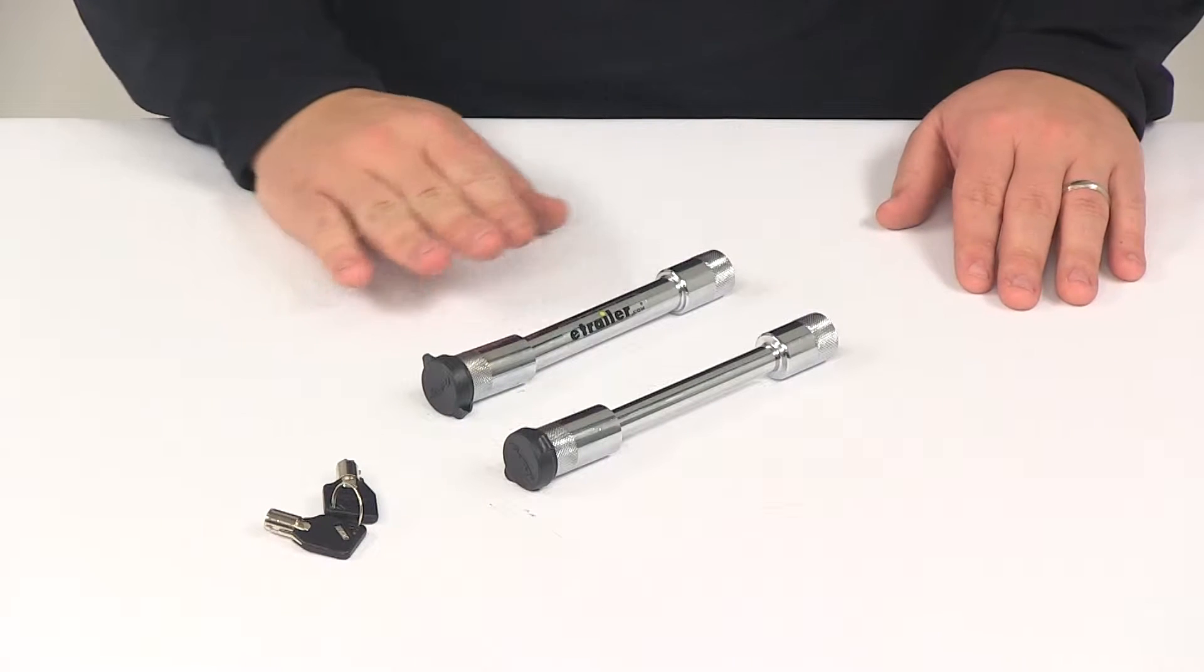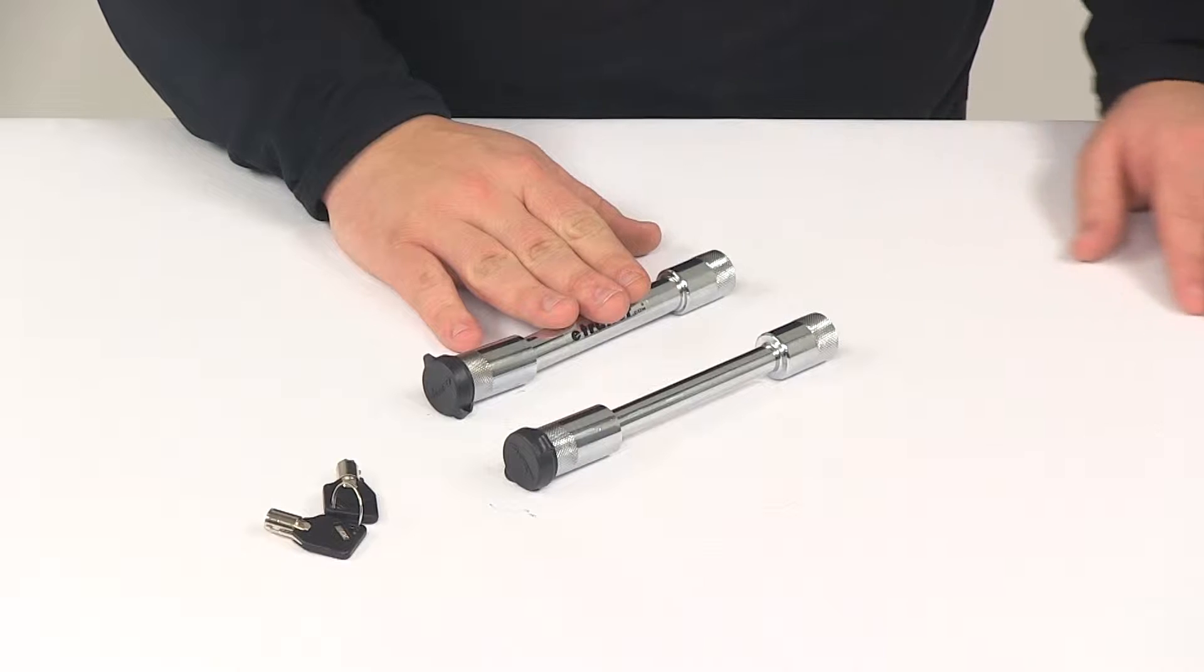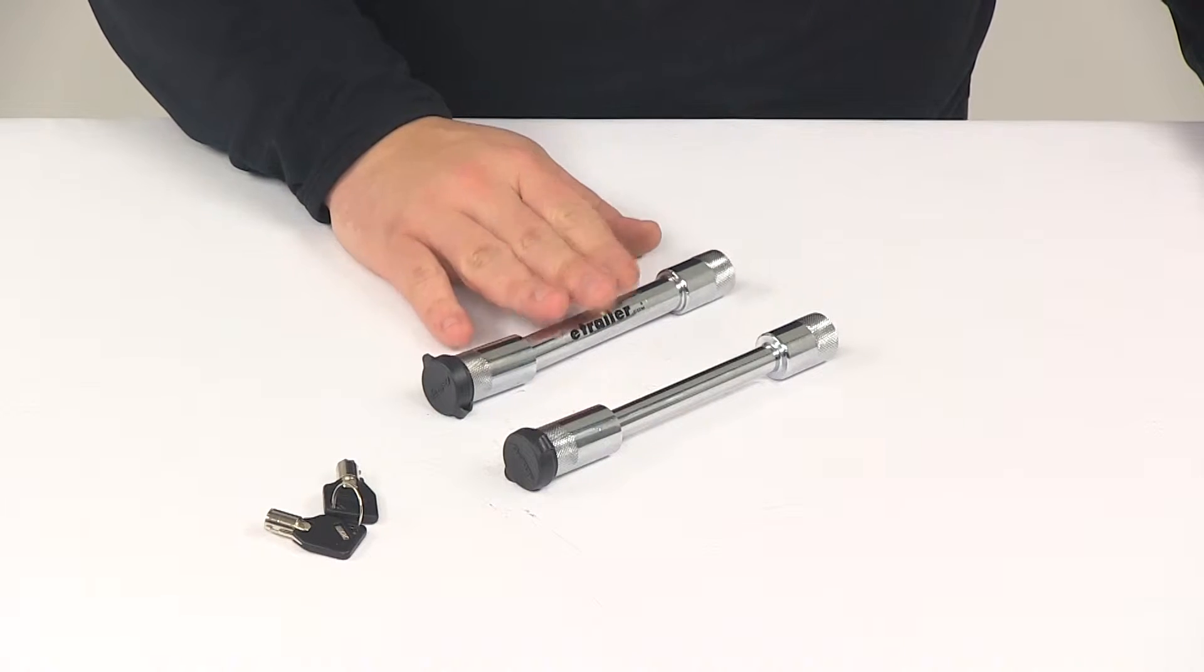It's going to come with your hitch receiver lock. This is going to be used in place of a standard hitch pin and clip to secure the shank of your ball mount in your receiver to the vehicle.